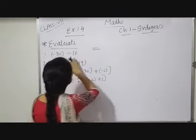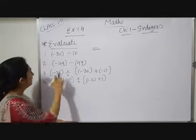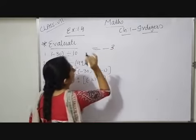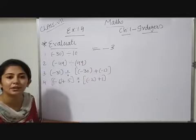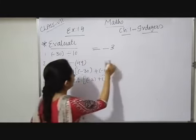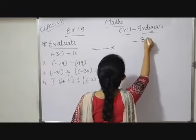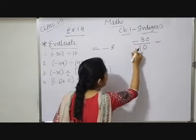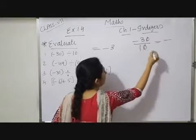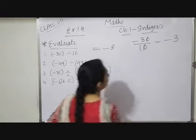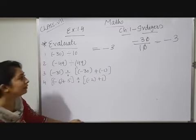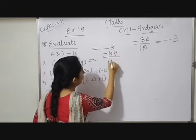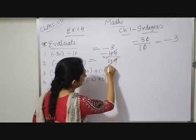If you understand directly, then fine. For example, minus 30 divided by 10 will be 3 — minus÷plus=minus, so the answer is −3. If you cannot calculate directly, write minus 30 over 10 as a fraction; the zeros cancel and the result is 3. Similarly, minus 49 divided by 49: the 49s cancel, answer is minus 1.